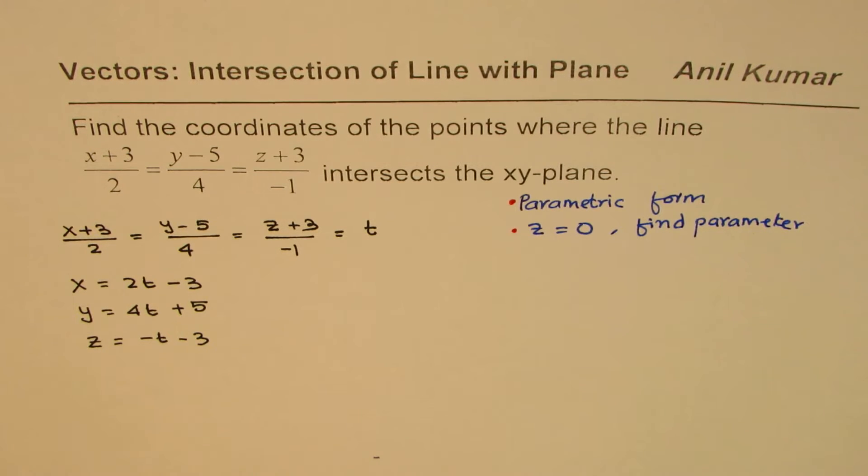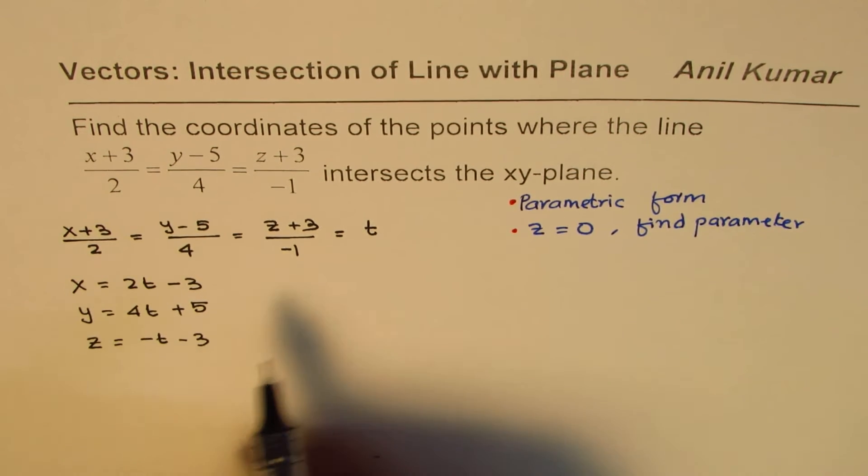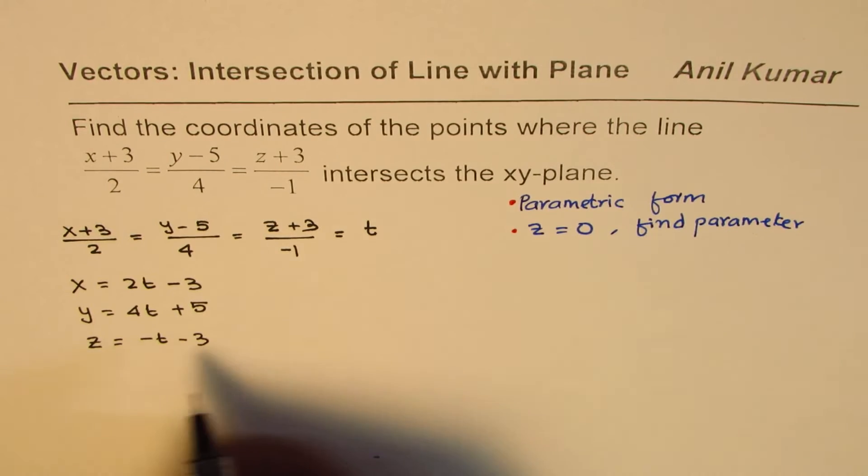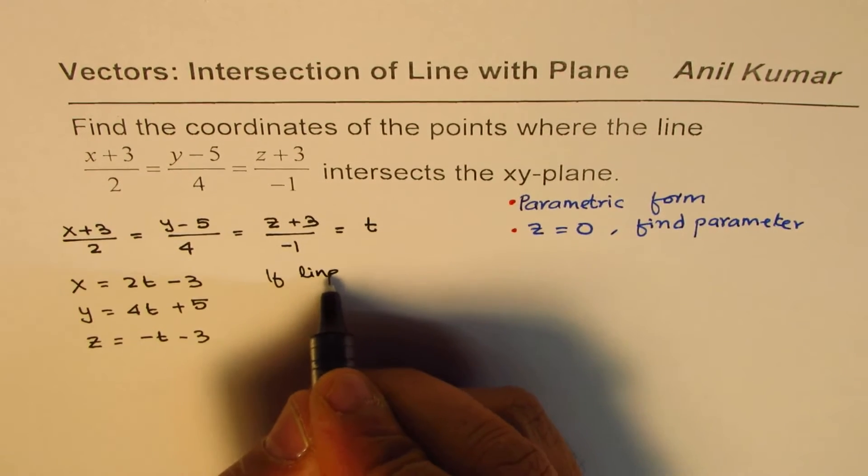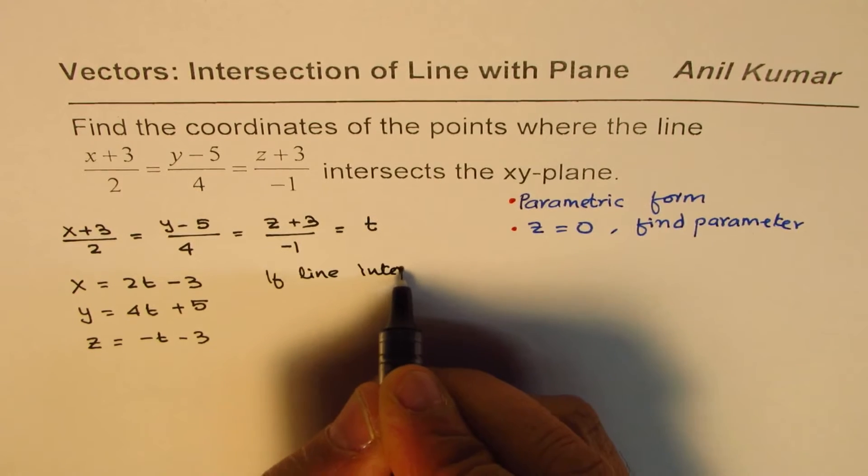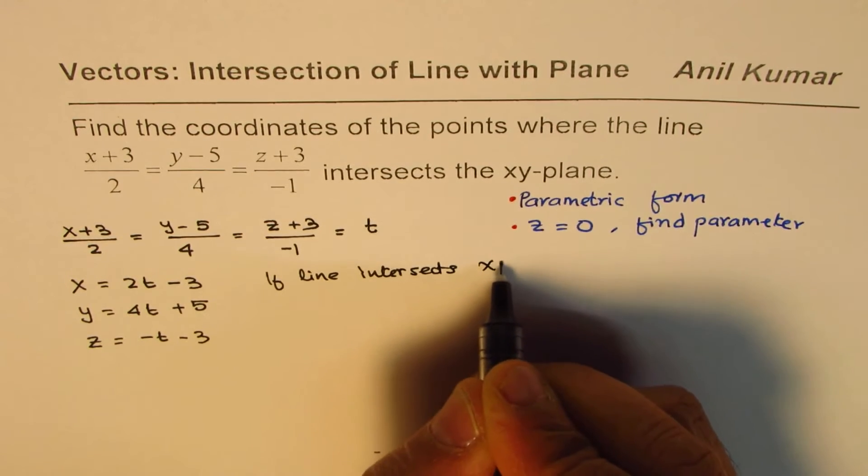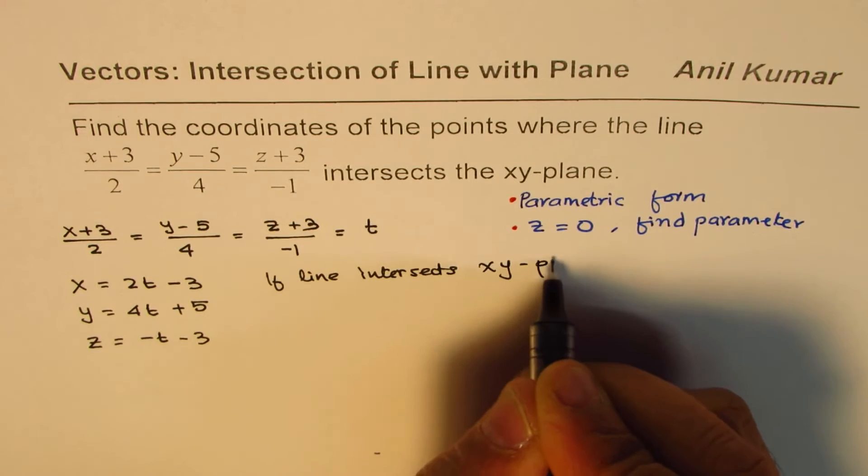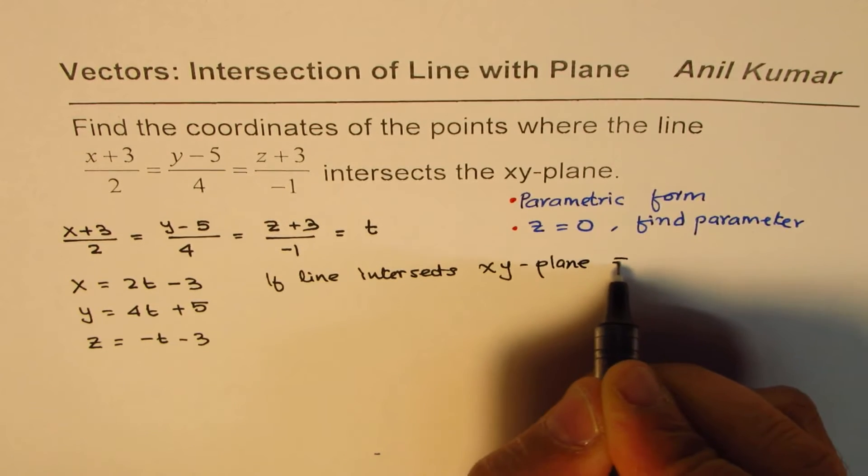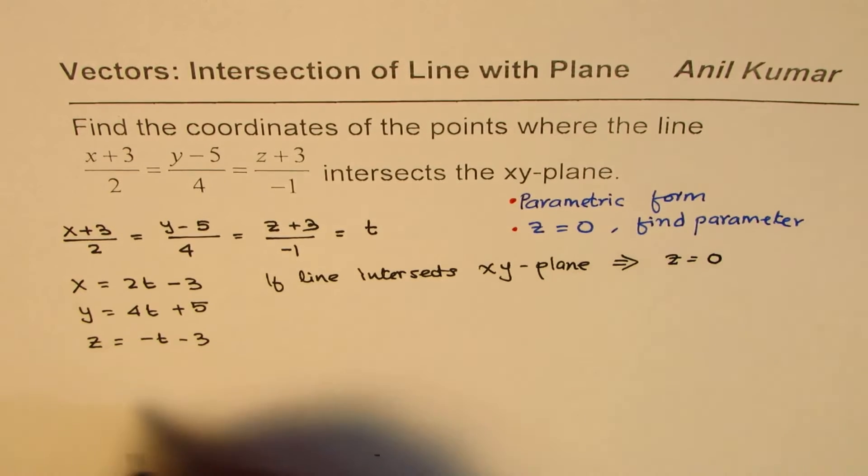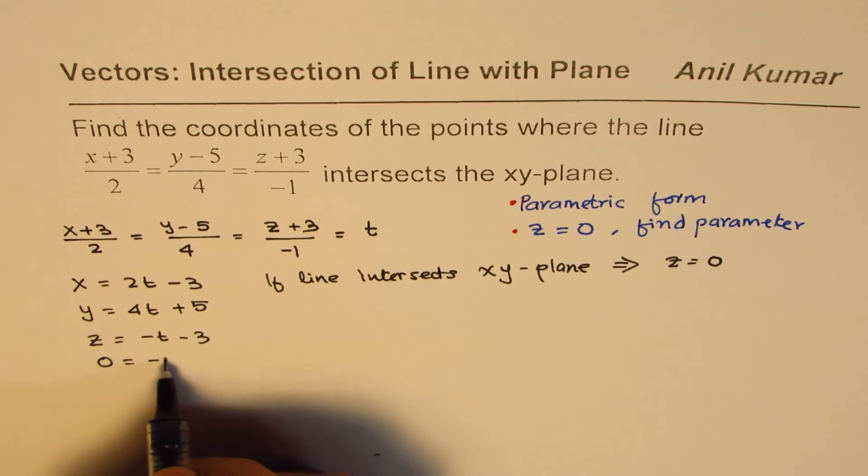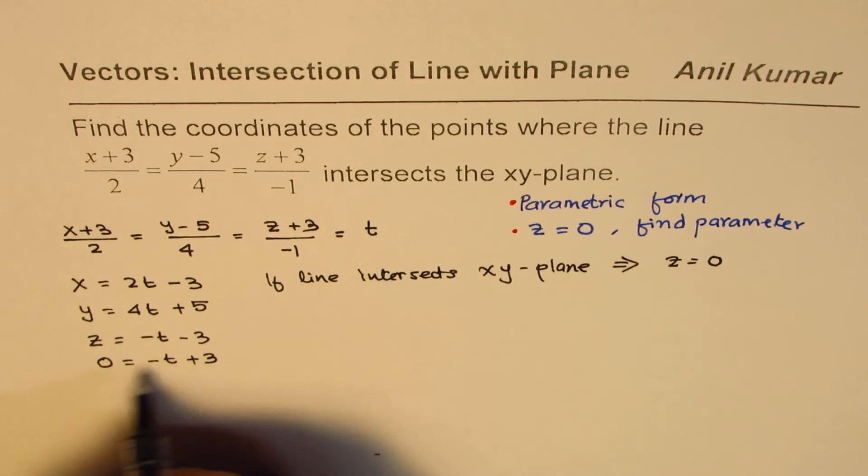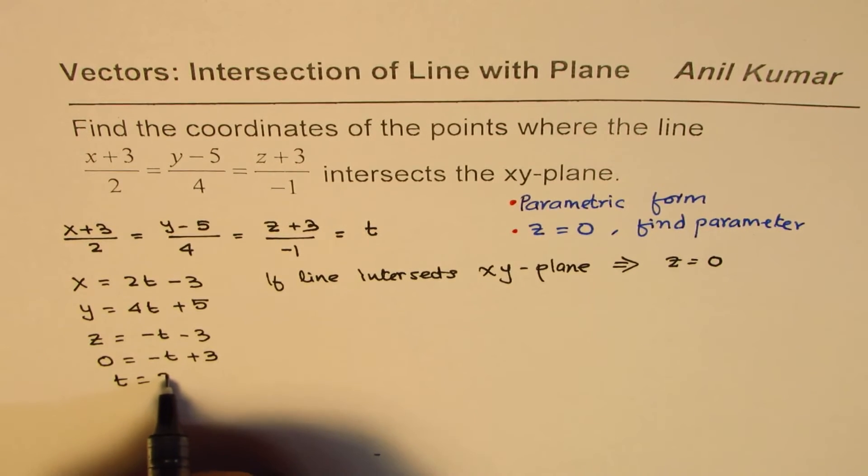Now, from these three equations, we have to get x, y, z coordinates where the line intersects xy plane. So if line intersects xy plane, that implies that z should be equal to 0. So if I equate z equals to 0, I can find the value of t. So minus t plus 3. So bringing this, t equals to 3.